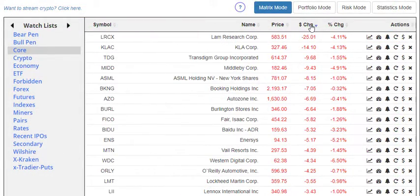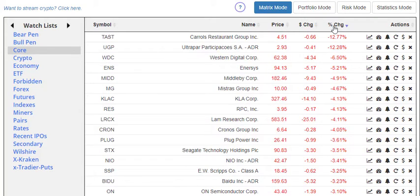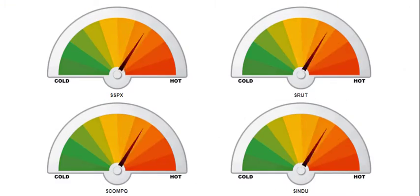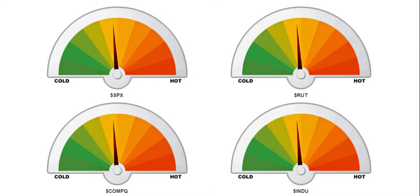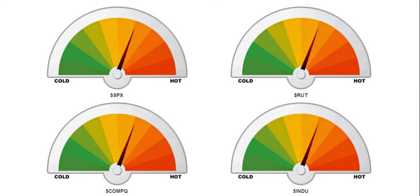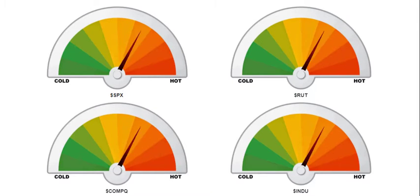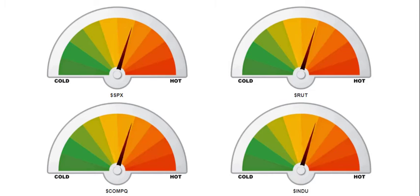For an instant view into portfolio performance and the big gainers and losers in your watch list, you can use Slope Matrix. And for a broad view into the market's general performance, there's the Meter Matrix screen, which focuses on the most important US stock indexes.